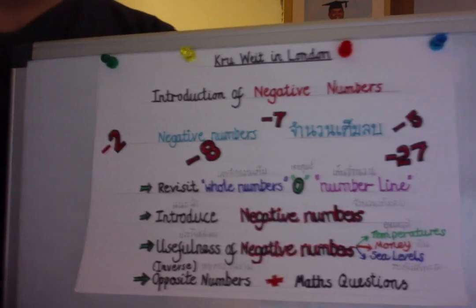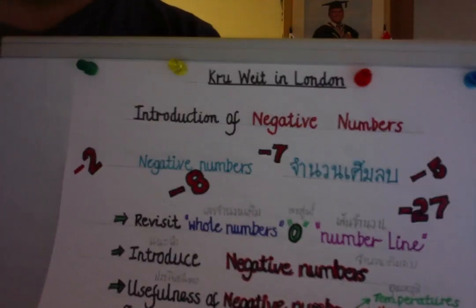So I'm back here today for a mathematics lesson. This lesson is about negative numbers. Today we'll look at what we're going to learn about first.